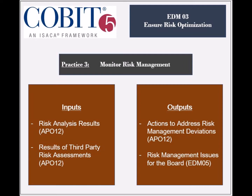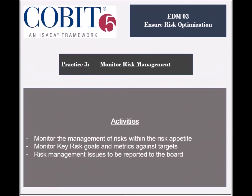The Risk Management Issues for the Board are to be used by the EDM-5 process. The activities of this process include Monitoring the risk profile management in relation to the risk thresholds, and Monitoring the key risk goals and indicators. If deviations to the risks happen, the causes should be analyzed and Remedial Actions should be taken. Finally, any risk management issues should be reported to the Board and Executive Management.